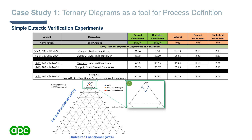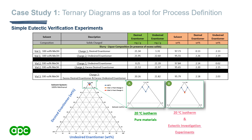To verify a simple eutectic system, saturated samples of the desired and undesired enantiomers are individually prepared and their isothermal solubility checked by HPLC. An excess of the opposite enantiomer is then added to each liquor and allowed to equilibrate. A simple eutectic system should converge at the same eutectic point regardless of the starting enantiomer. Both enantiomers converged to the same eutectic point, confirming that a simple eutectic system was at play.